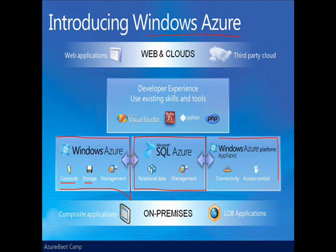Lastly, we have Windows Azure App Fabric. App Fabric today provides two capabilities: one is access control — security — and the other is a service bus to provide connectivity either between applications in Azure environments, between applications that run on-premise, or between applications in the cloud and on-premise.